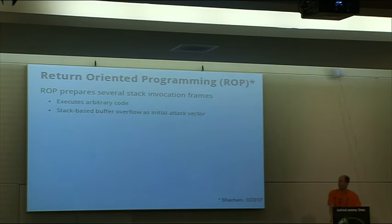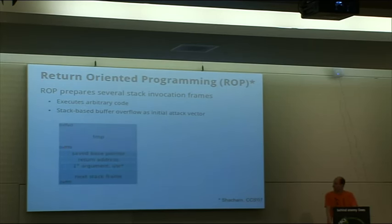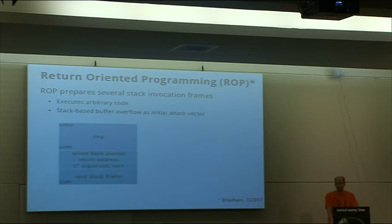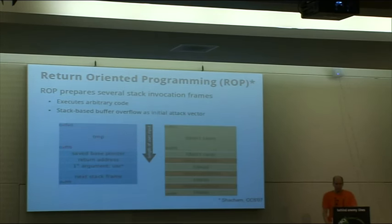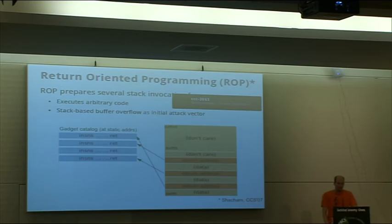Return-oriented programming is one of these data-based attack forms that prepares a set of stack frames on top of each other with specific instructions or return directions to code sequences in the program. Using the same sample program, we once again have the stack frame and use our buffer overflow, but with data execution prevention enabled we can't inject code onto the stack. Instead we prepare a set of return addresses pointing to a gadget catalog pre-identified from existing code. We search the application for instruction sequences that always end with a return instruction and implement a stack machine with additional stack frames.